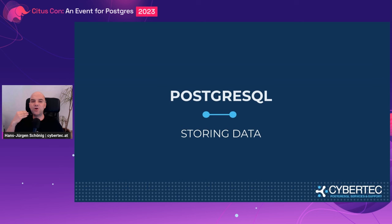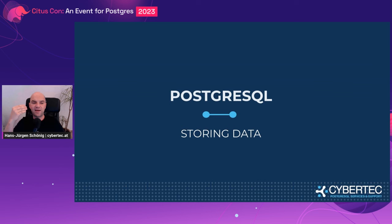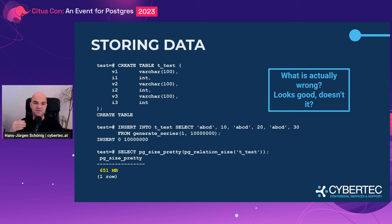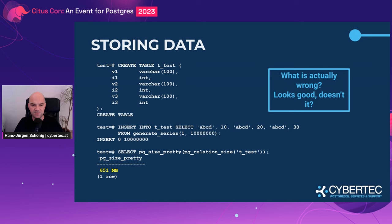The next thing is when we are storing data, there's a lot we can do to make it more efficient. I've created a small table with a mixture of varchar and integer columns — varchar, integer, varchar, integer, varchar, integer. We insert 10 million rows, and the table is 651 megabytes. If we put the integers first and the varchars later, the table shrinks from 651 megabytes to 574 megabytes. The reason is alignment — Postgres internally uses CPU alignment to ensure certain data starts at certain positions in memory and on disk. Fixed-size data types first, variable data types later makes the table smaller.